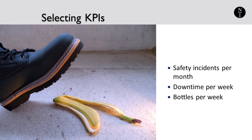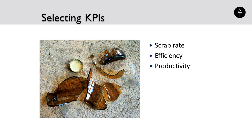Let's bring another beer producing company into our example and call them beer company number two. Suppose beer company number two is not experiencing excessive downtime or increased safety incidents like our first beer company. This second company may have a focus on eliminating waste in production. Waste in production is defined to be things like producing scrap, which is unusable product or material, overproducing inventory, and having unnecessary steps in the production line. This beer company would align its KPIs to measuring the reduction of this waste and improvements in efficiencies.